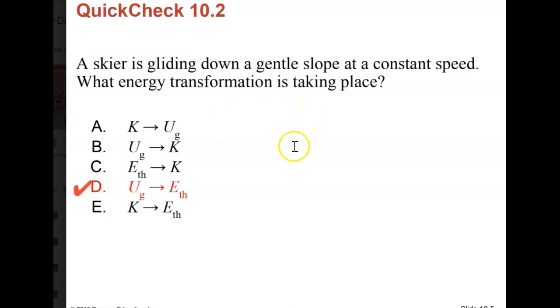As he loses height, he is producing thermal energy. Here, he is not producing more speed. He's moving at constant speed. Does he have kinetic energy? Yes, but as we continue to lose height, lose potential energy, we don't gain any more speed. This must be the answer.